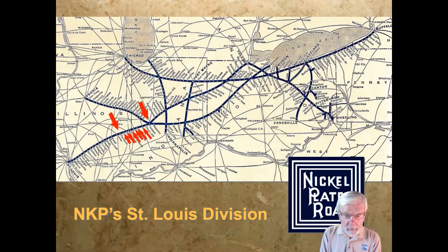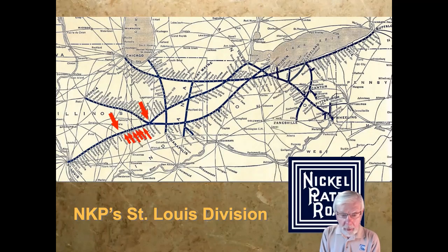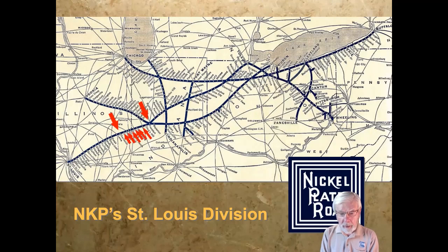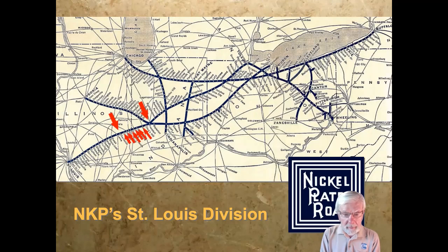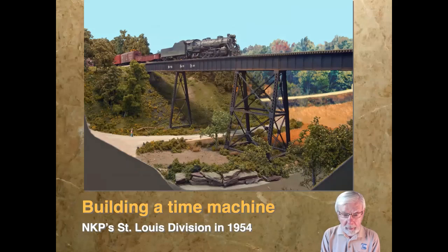The two big arrows are the division points — Frankfort, Indiana on the right, and Charleston, Illinois on the left. I modeled both division points. The small arrows below the line are all the towns I've modeled. As we talk about timetable and train order operation briefly, you'll notice that there are a lot of places where trains can meet and pass, and that's a very important part of timetable and train order operation.